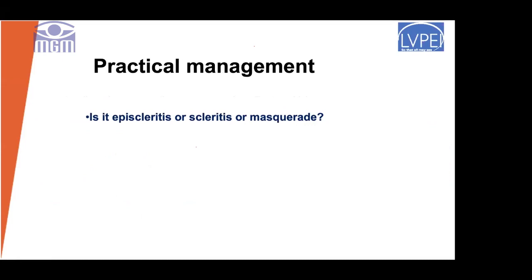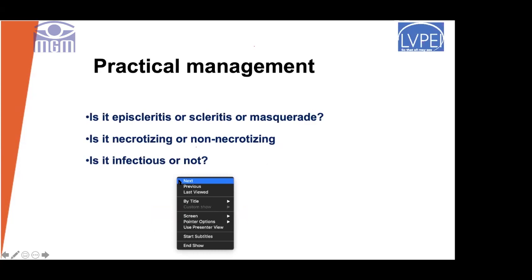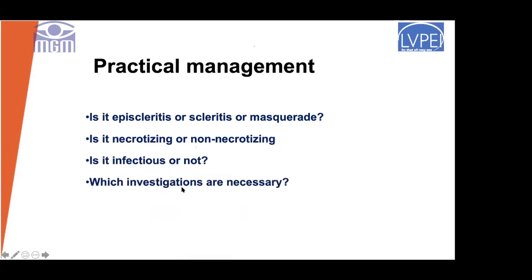Coming to practical management. When the patient comes to the clinic, first figure out: is it episcleritis, scleritis, or a masquerade? Once we determine it's scleritis, figure out if it's necrotizing or non-necrotizing - very important because the necrotizing variant is more often associated with systemic disease. If there's necrosis or tissue breakdown, make sure you are not missing an infection - ask for history of trauma or recent surgery. Once you answer these questions, you can determine which investigations to do and plan the management strategy.